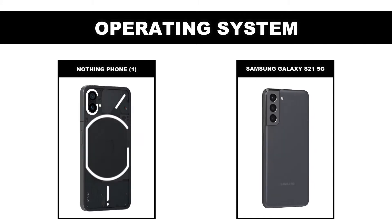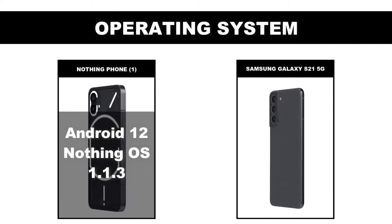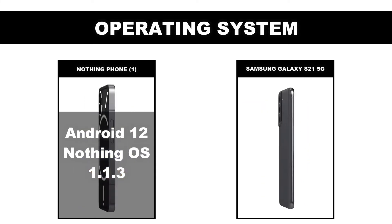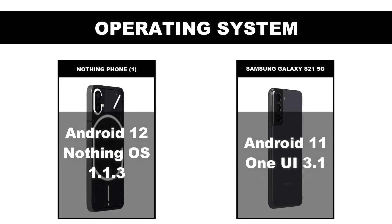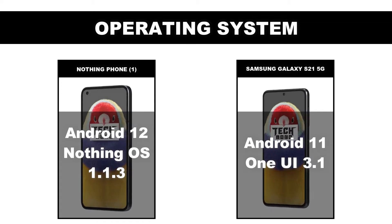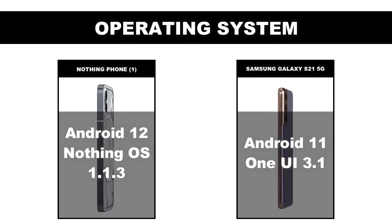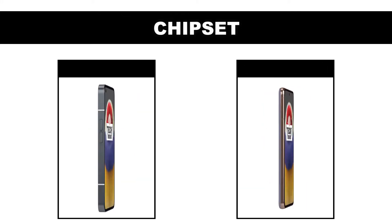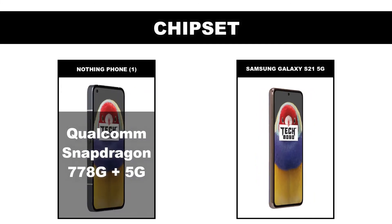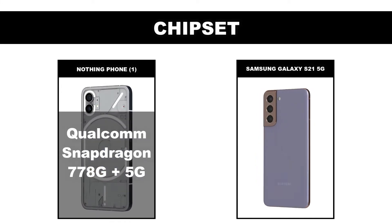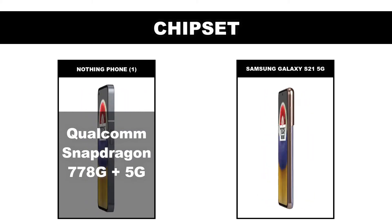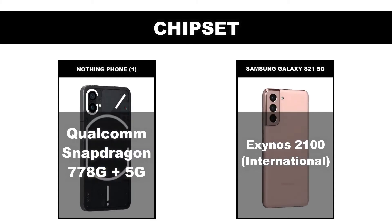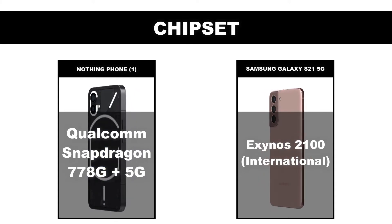Operating system: Nothing Phone 1 is Android 12 with Nothing OS 1.1.3, Samsung Galaxy S21 5G is Android 11 with One UI 3.1. Chipset: Nothing Phone 1 is Qualcomm Snapdragon 778G Plus 5G, Samsung Galaxy S21 5G is Exynos 2100 (International).